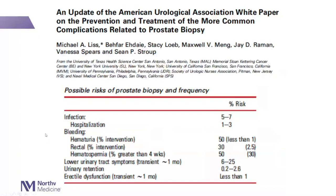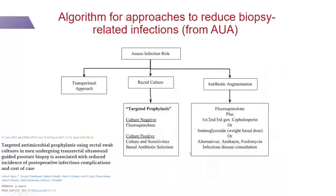How can you reduce infections after prostate biopsy? There is an approach we use at Northwestern developed by my father with Teresa Zembauer and Robert Nather — using rectal swabs or targeted prophylaxis. Depending on rectal swab results, you modify periprocedural antibiotics. In their series, they reduced infectious complications to 0%; at Northwestern in real-world practice, our infectious complication rate is about 1 to 2%, which is better than before, but there's still room for improvement.